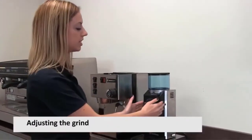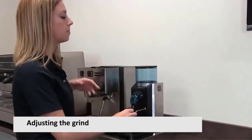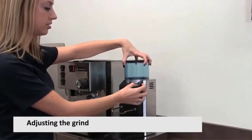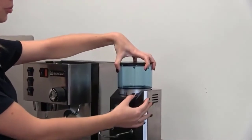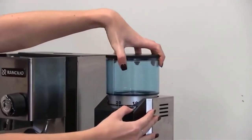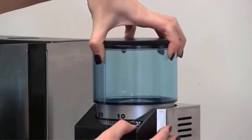Some users found that the spout can be messy, and the portafilter should be held directly beneath the spout to reduce any possible mess. Avoid using oily beans in this grinder, as this can make the machine prone to jamming.